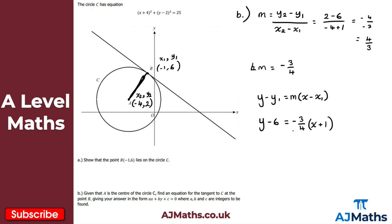Expanding the right-hand side: y minus six equals minus three over four times x, minus three over four. Since the answer needs to be in the form Ax plus By plus C equals zero with integers, we multiply everything through by four to eliminate fractions. This gives 4y minus 24 equals minus 3x minus 3.